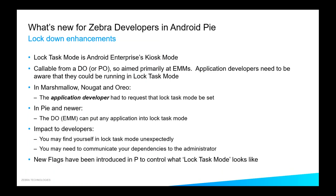There have been some enhancements to lock task mode and the ability to lock down the device. Lock task mode was introduced in Android Marshmallow with minor improvements in Nougat and Oreo — it was the ability for an application to be a kiosk application, or for the administrator to choose a number of applications as the kiosk. Before Pie, an application had to know it would be in the kiosk and had to call the set lock task mode API from the app itself. In Pie, it's possible for the EMM or the device owner — it has to be in device owner mode — to put any application in lock task mode.